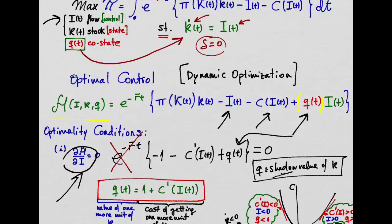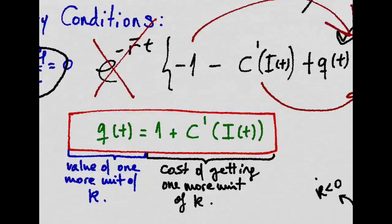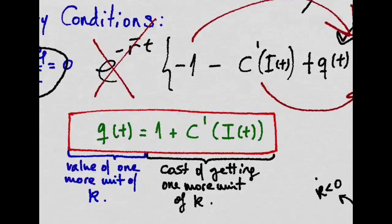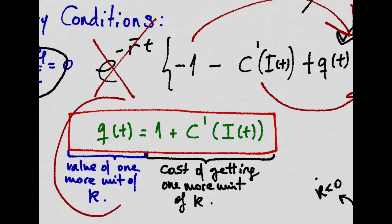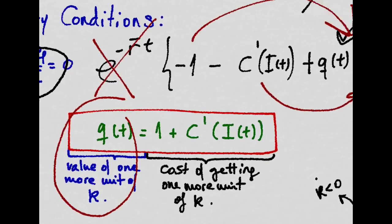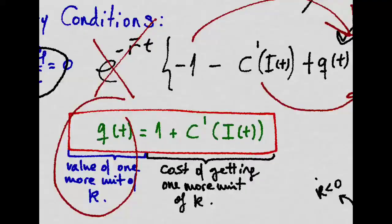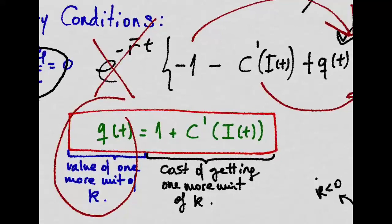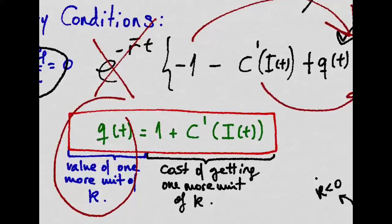Finally we have to add Q. We can get rid of this e that's multiplying there, and if we take these two guys to the other side, we will get an expression like this. Thus, the first optimality condition just states that the marginal value of capital, the value of one more unit of capital, has to be equal to the cost of getting that one extra unit.